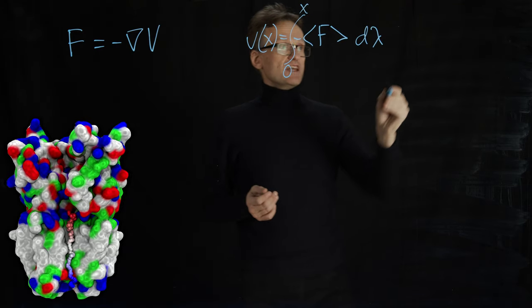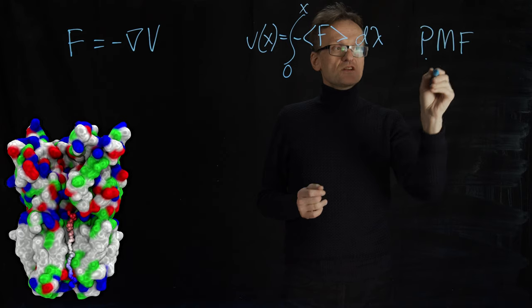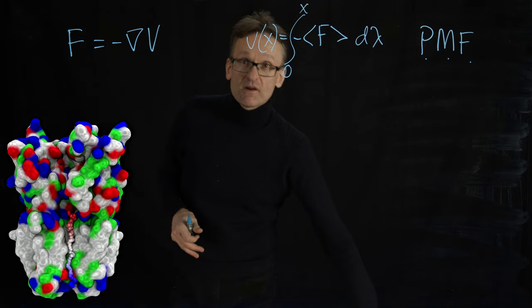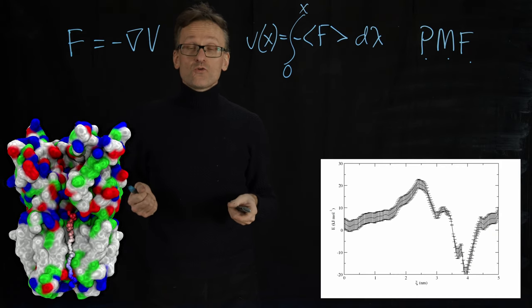This even has a name. It's called PMF or potential of mean force. Very efficient. And when I do that, I get a free energy along a reaction coordinate.